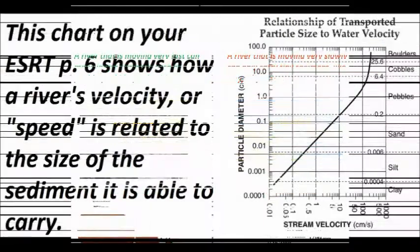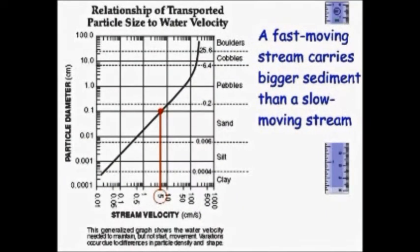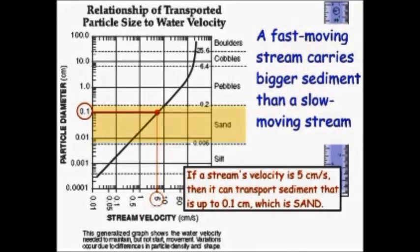This chart on your reference table, page 6, shows how a river's velocity, or speed, is related to the size of the sediment it is able to carry. You can see that if we pick a velocity — let's say 5 centimeters per second — you follow that line up to where it meets the curved black line, then follow that over to the left, and you can see that this could move a sediment up to 0.1 centimeters, which is in the category of sand.